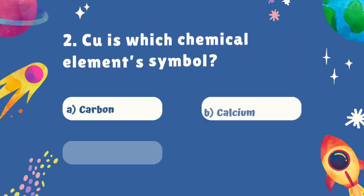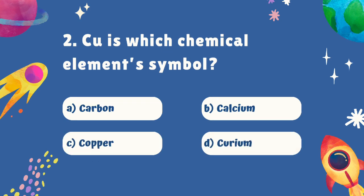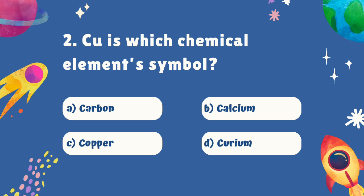Question number two. Cu is which chemical element symbol? Is it A. Carbon, B. Calcium, C. Copper, or D. Curium? The correct answer is C. Copper.